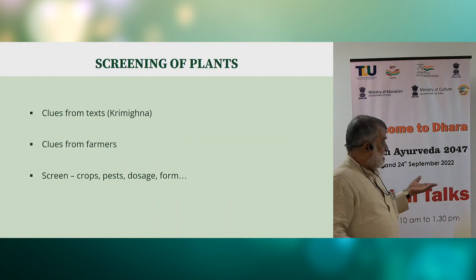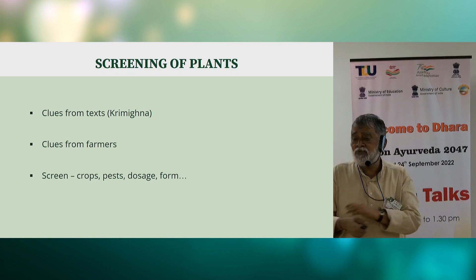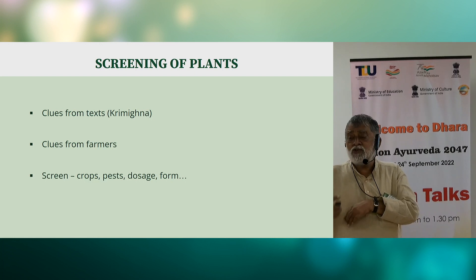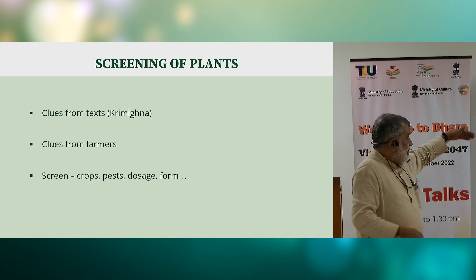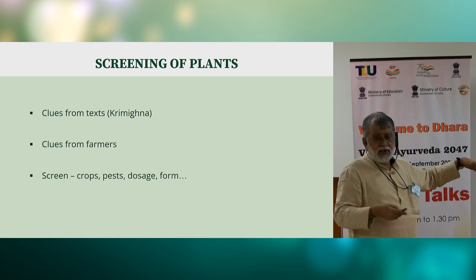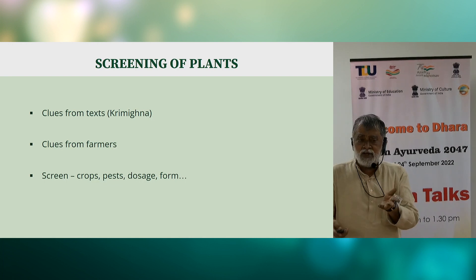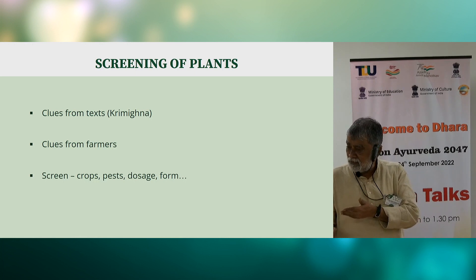Searching for new biopesticides is very interesting because the Acharyas have classified herbs that belong to the Krimighna gana — that which can be used to control Krimi. One has to use upaya and yukti to determine which particular herb is used for which particular crop disease. Taking clues from texts and from farmers, we have screened herbs for various crops, pests and storage forms. For example, Andrographis paniculata, or Kiratatikta — used in folk medicine and extremely bitter — we find to be very effective in controlling fruit and shoot borers in some crops.